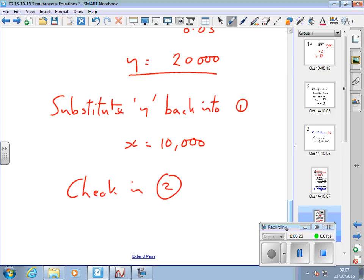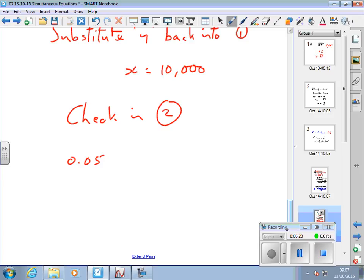So check in the other equation you didn't use. Let's check in 2. Does 0.05% of 10,000, I think it was, plus 8% of 20,000 equal 2,100? And I might have put them the wrong way around. And then if you're right, that will come out.